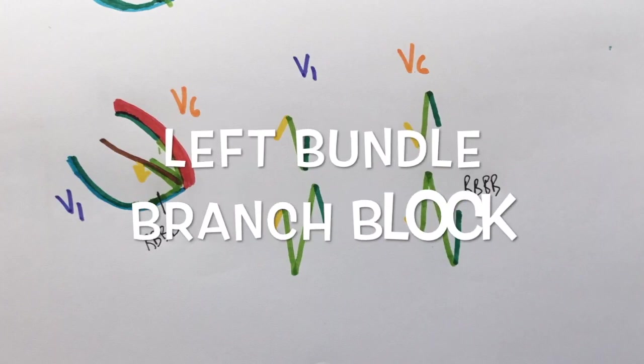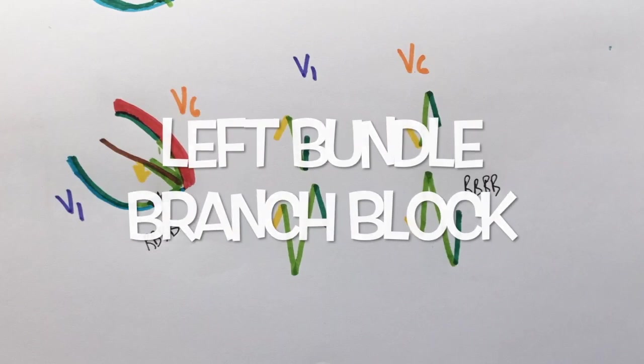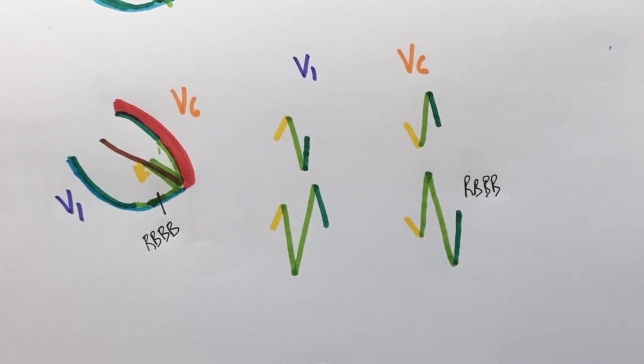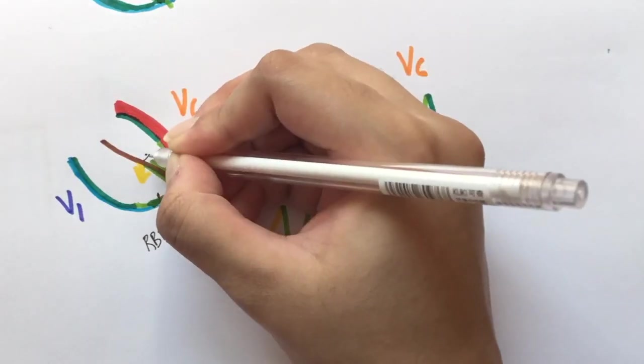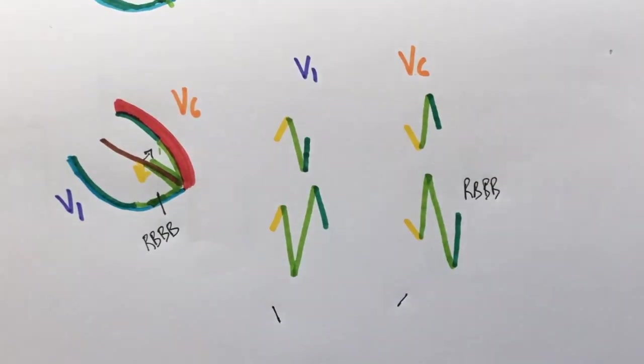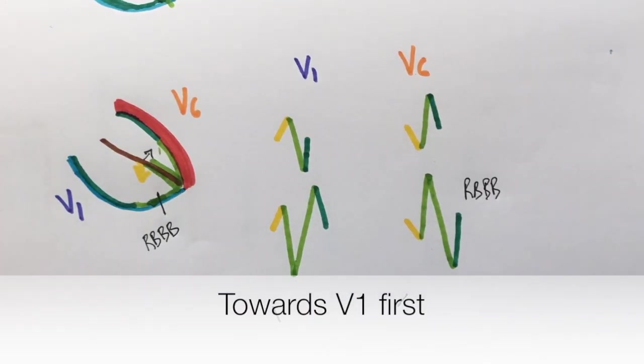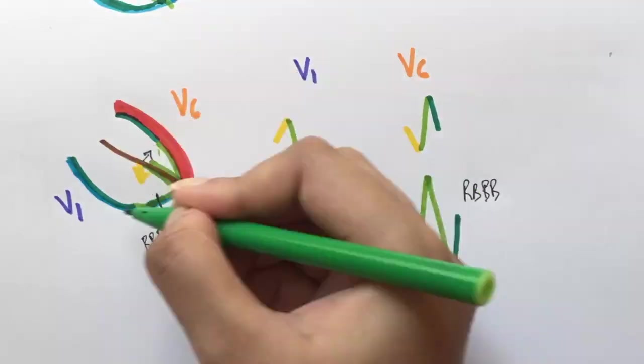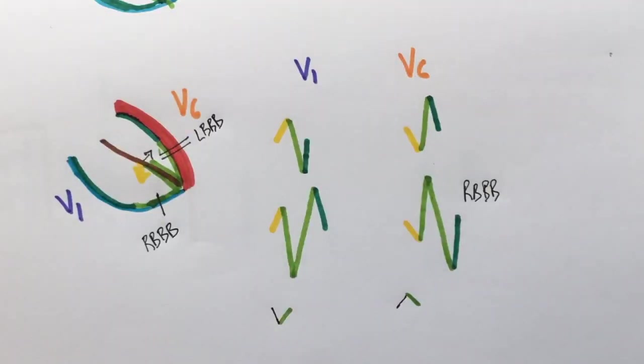In case of left bundle branch block, the septal depolarization is on the opposite side, i.e., towards the left side. So it will be downwards in V1 and upwards in V6. Since there is a block on the left side, the signal spreads to the right side first, giving V1 a positive deflection and V6 a negative deflection.